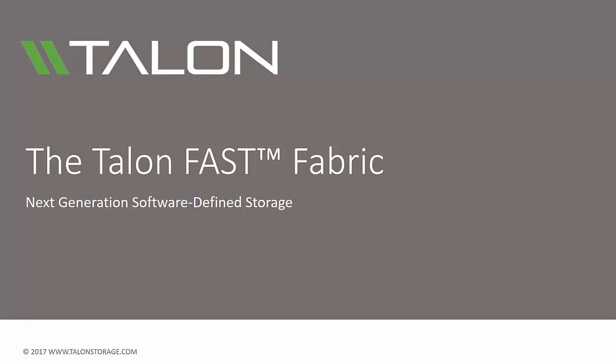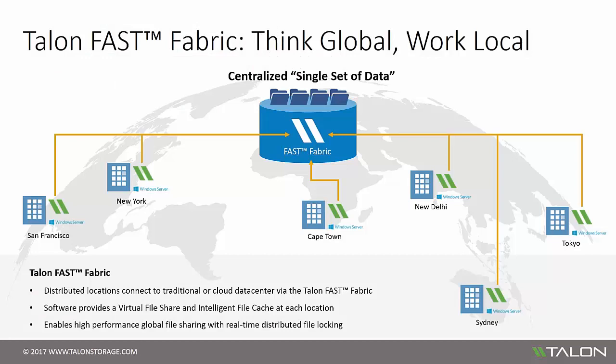The Talon Fast Fabric interconnects all of your locations, from distributed branch offices to the centralized data center, on-premise or in the cloud. The Fast software at the distributed locations provides seamless access to a virtual file share and high-performance file access via the intelligent file cache, which is unique to each location. Users at any site have immediate access to centralized datasets, enabling real-time global file sharing and collaboration with distributed file locking.